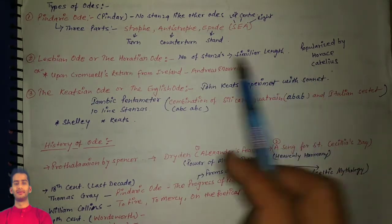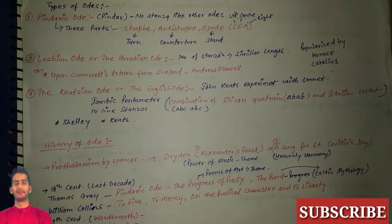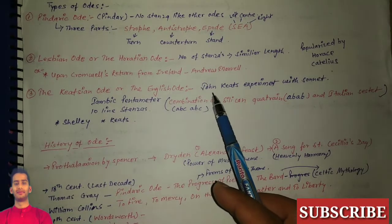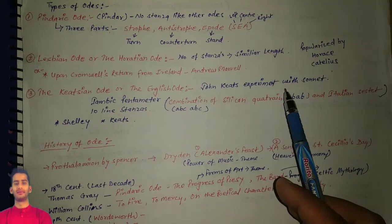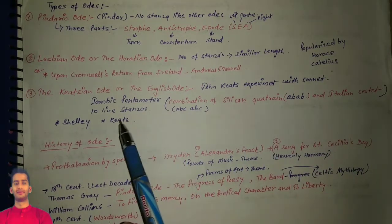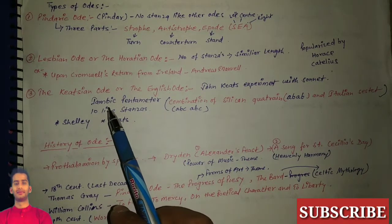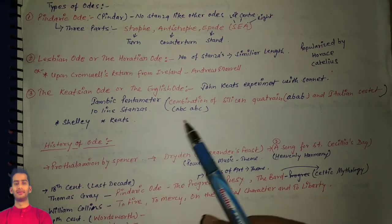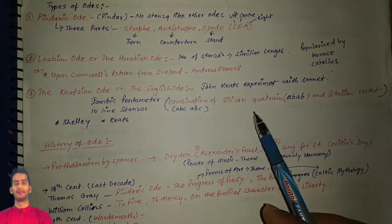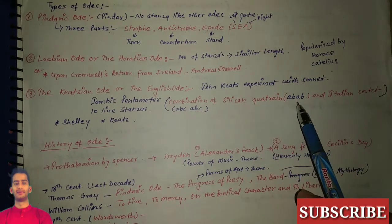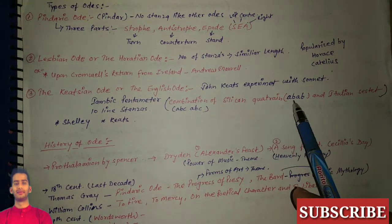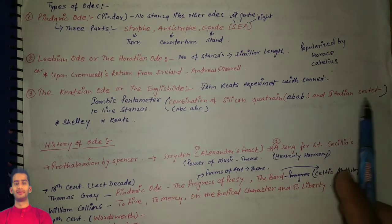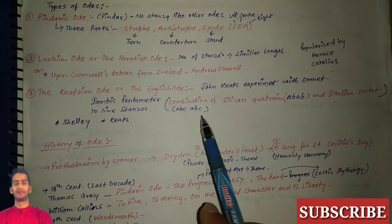The Keatsian ode or the English ode - John Keats experimented with this ode. If we talk about the structure, it has iambic pentameter and 10-line stanzas, combination of Sicilian quatrain, and the rhyming scheme is ABAB and Italian sestet of ABC ABC.